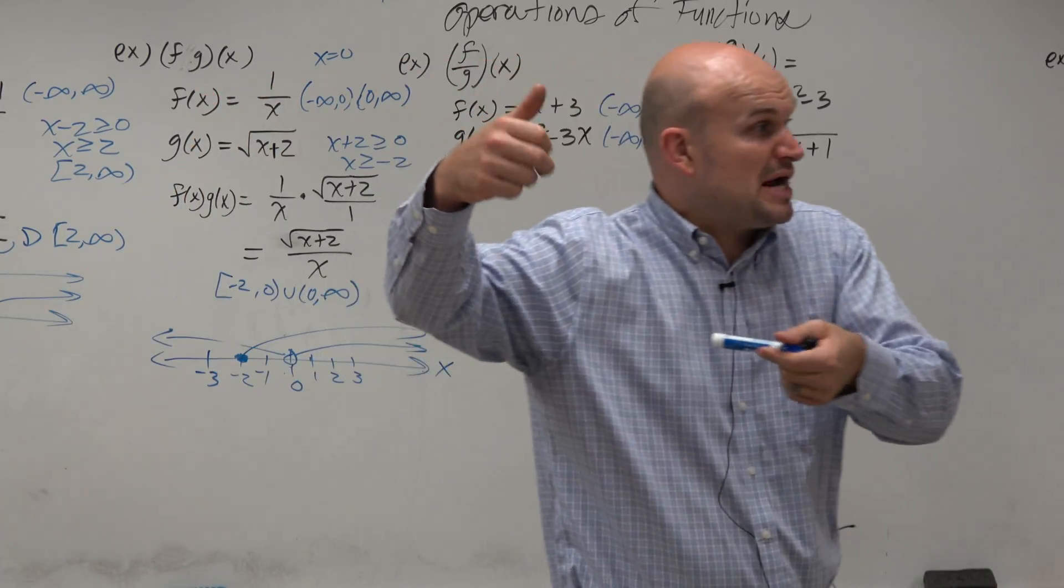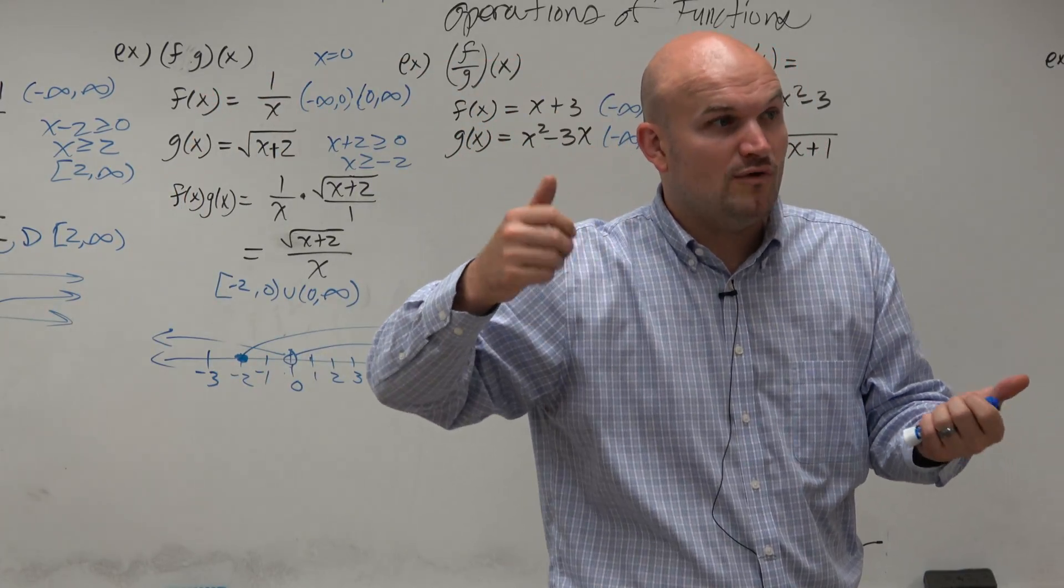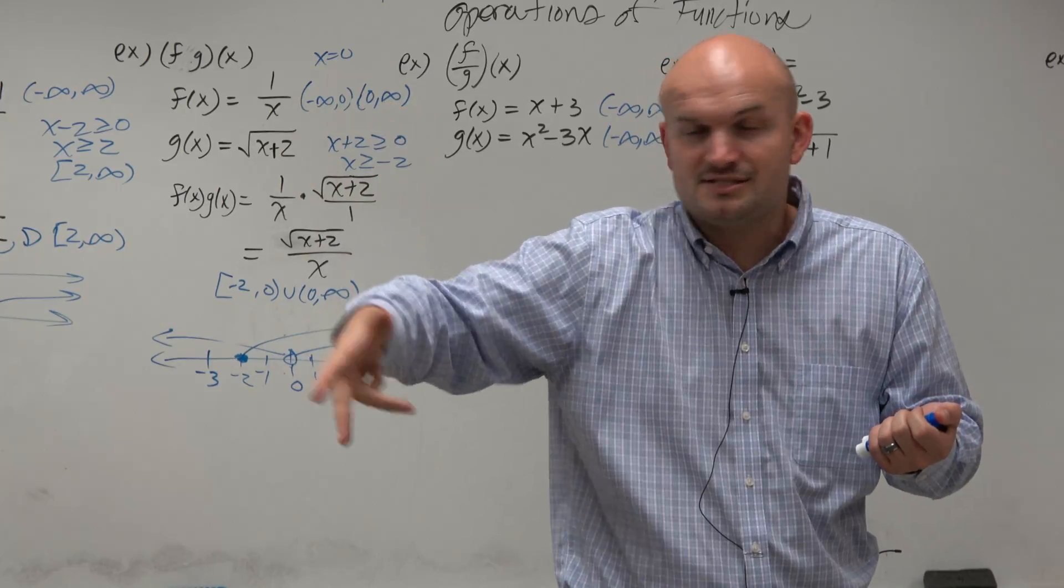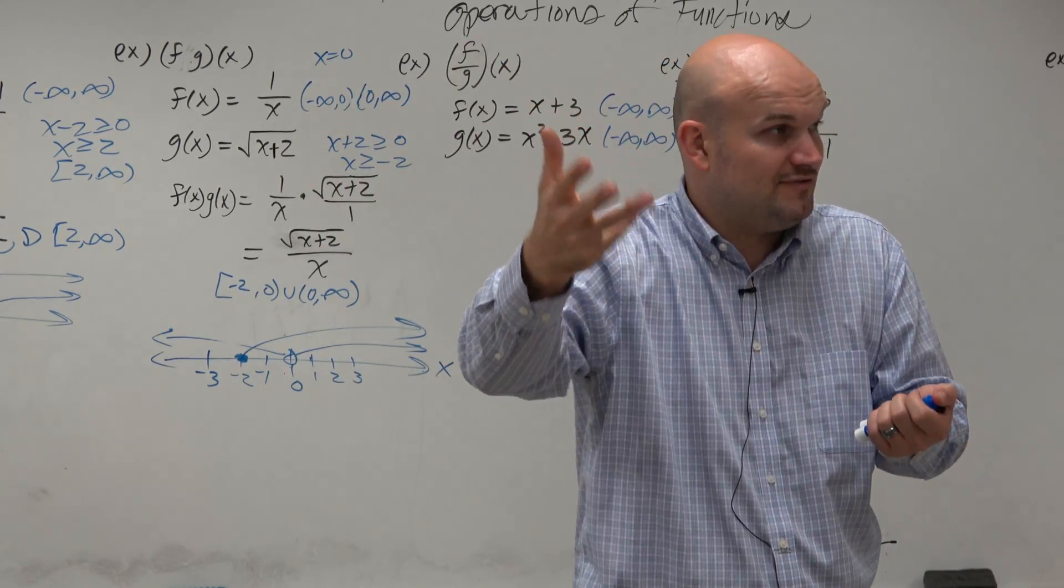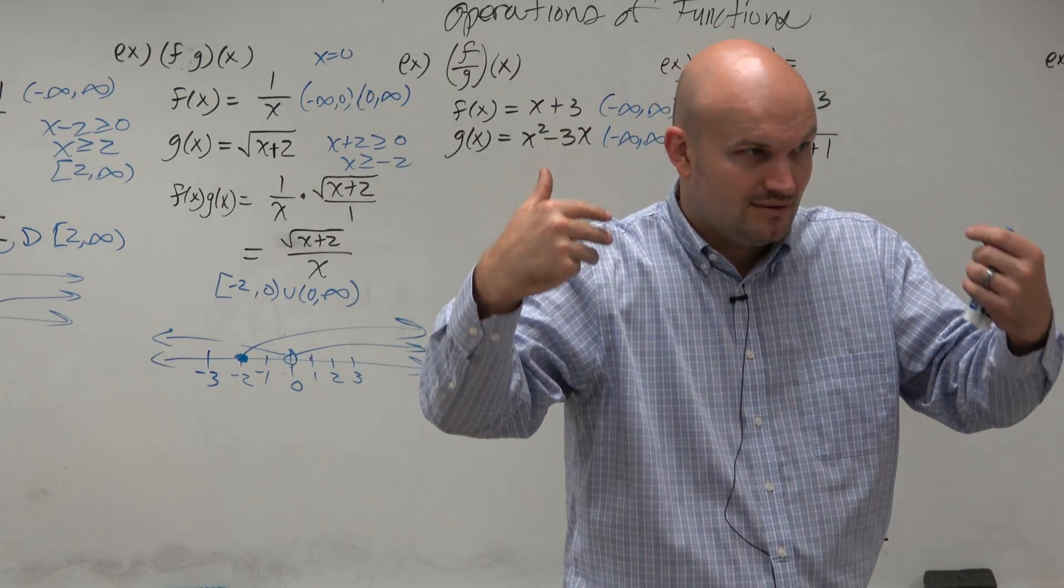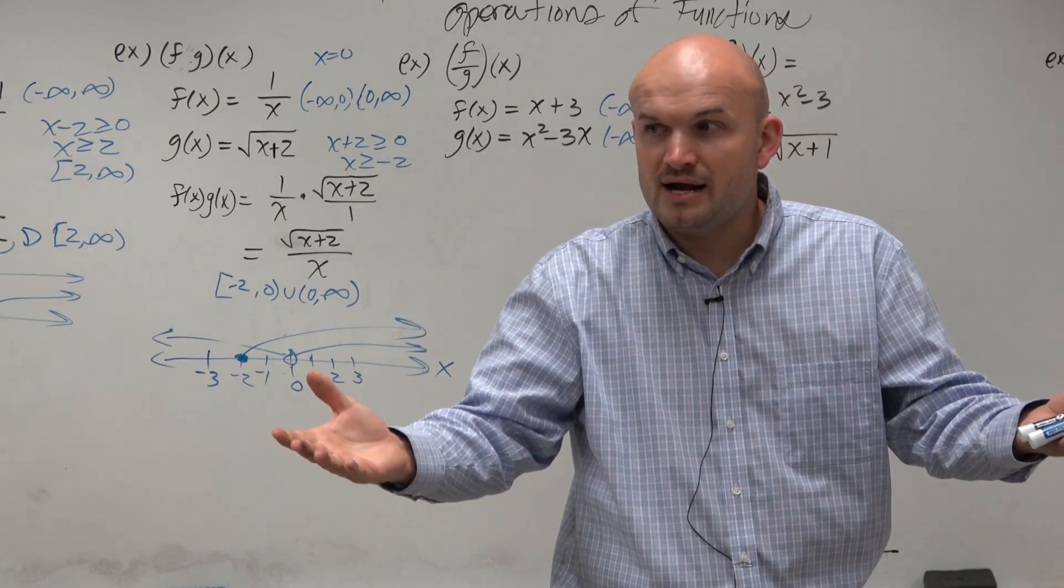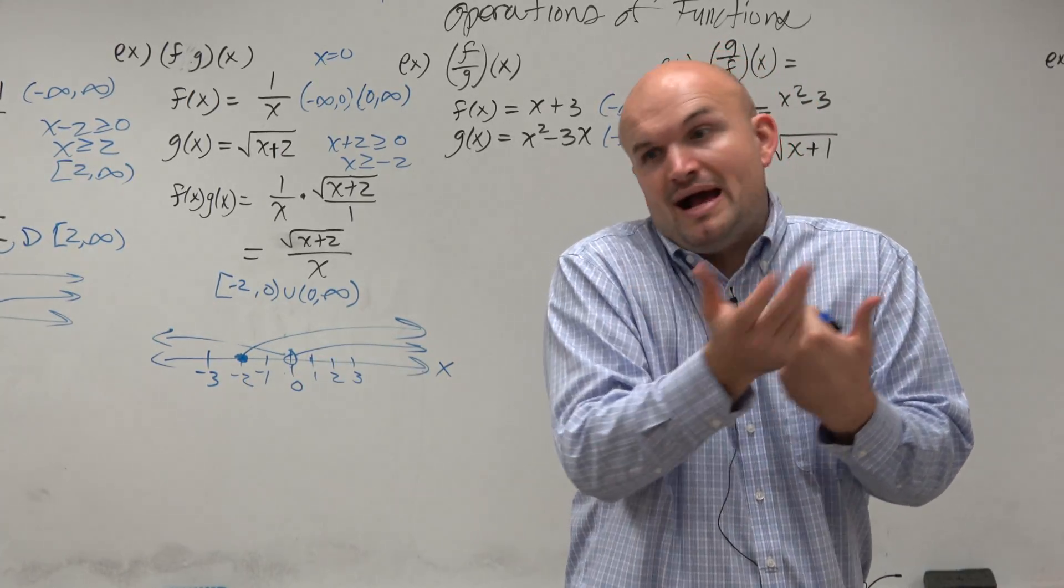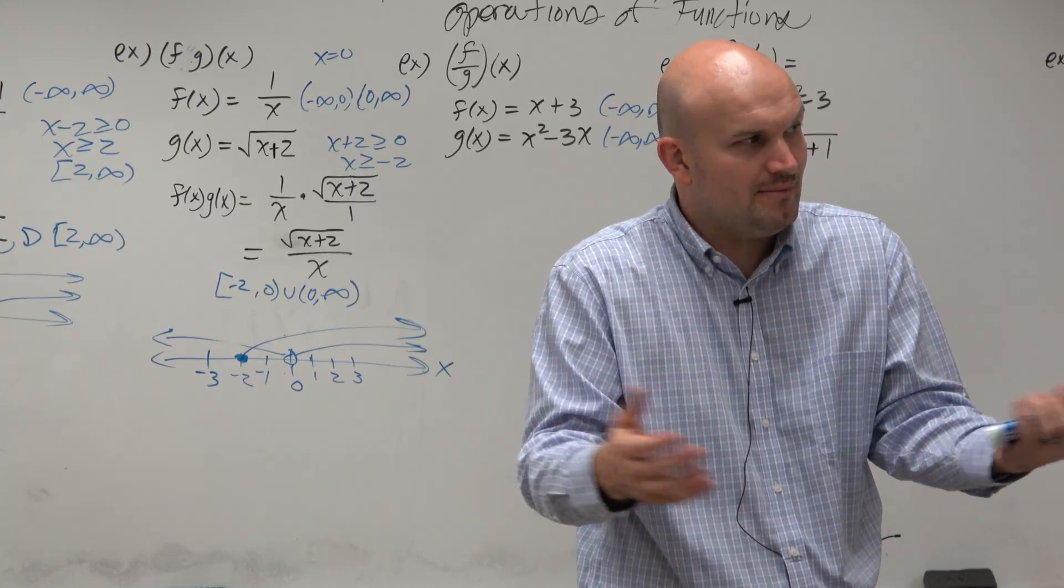So if this was addition, subtraction, or multiplication, we know that the product, the sum, or the quotient, then the domain of those would also be all real numbers. Because if the two functions are all real numbers, then whatever you add, subtract, or multiply is still going to be all real numbers.